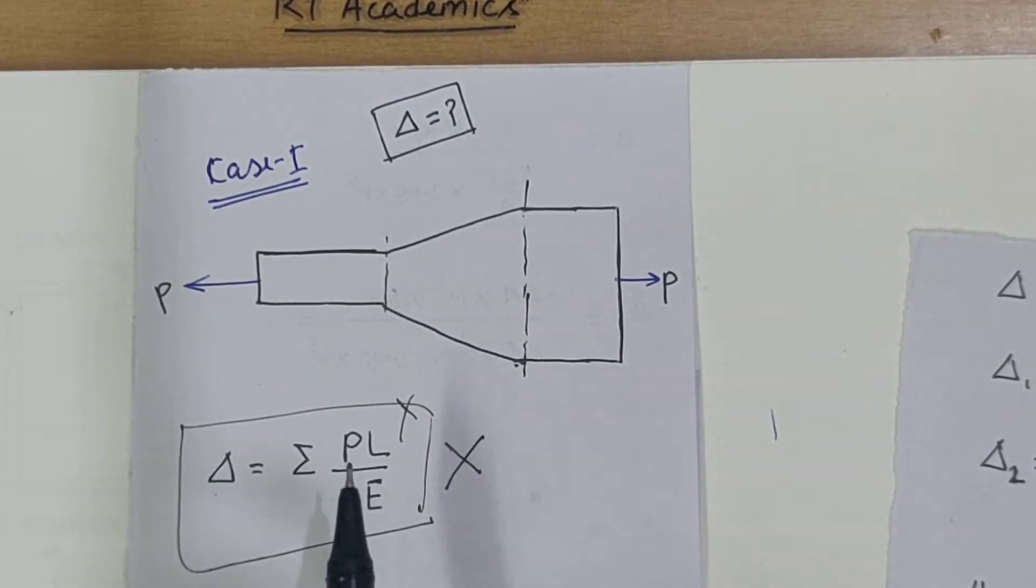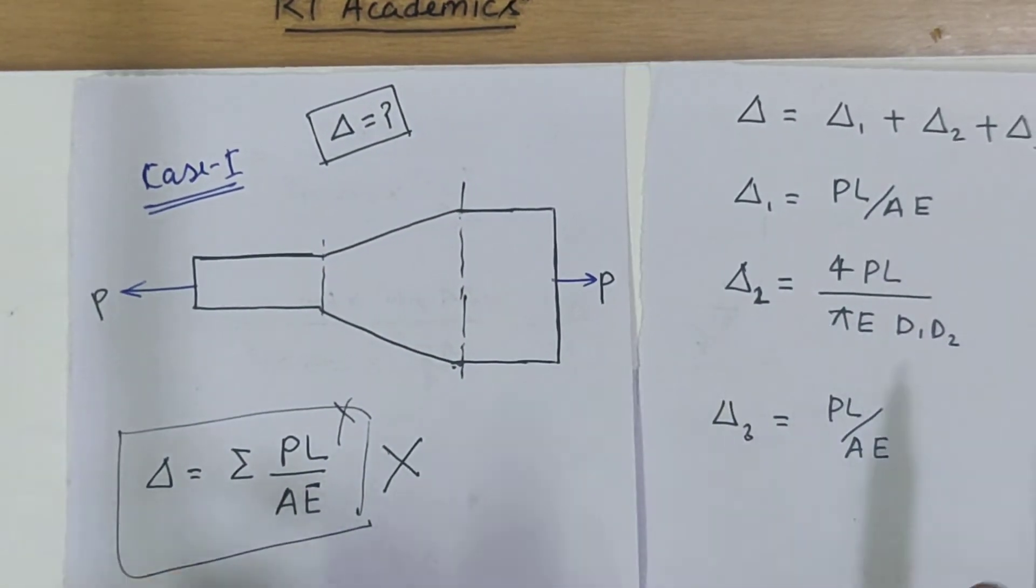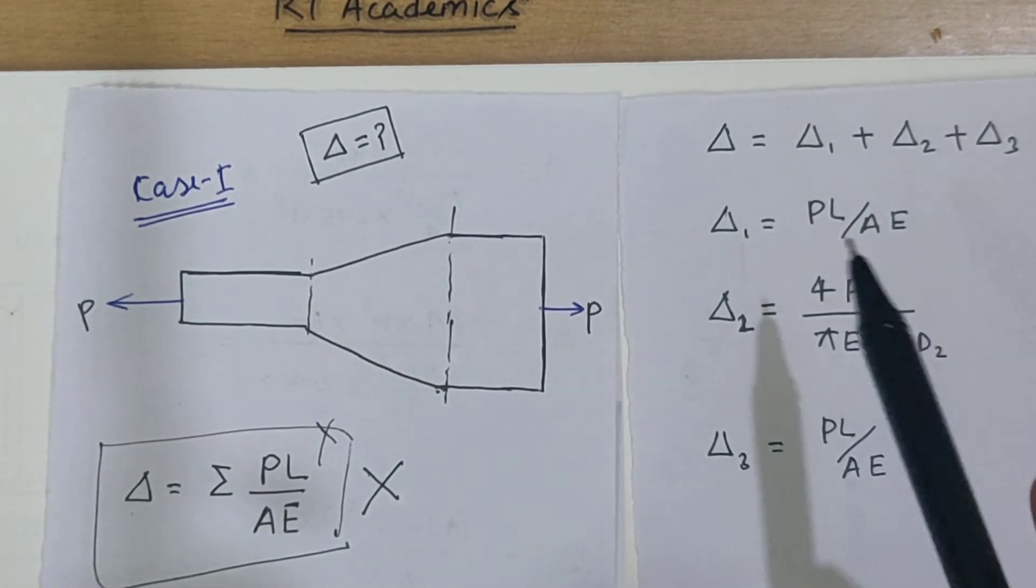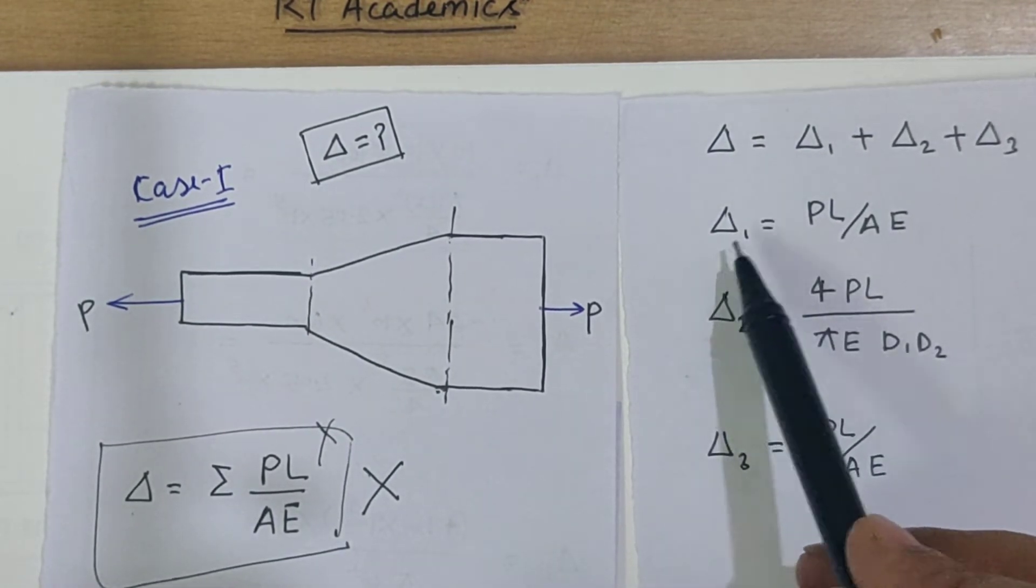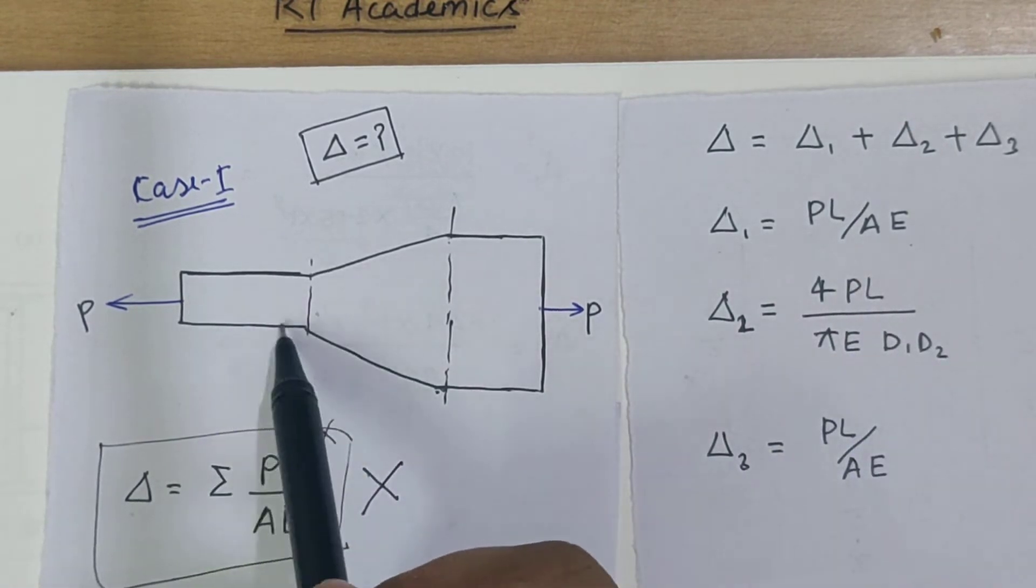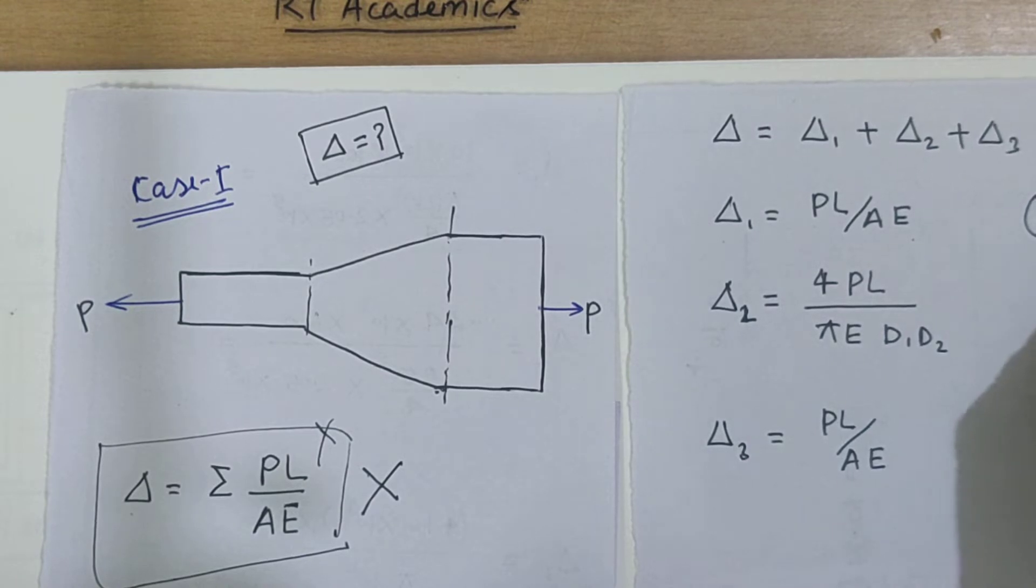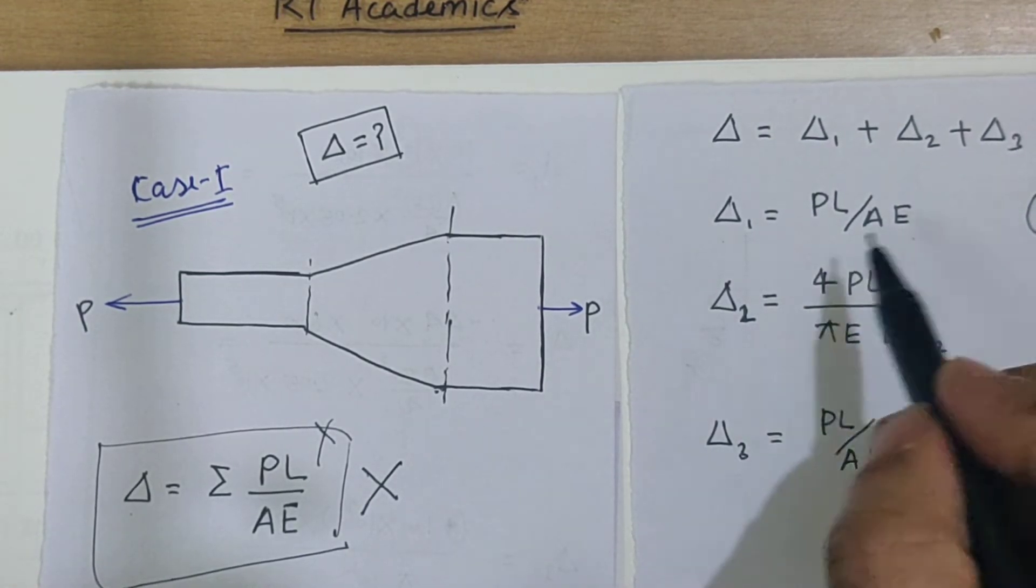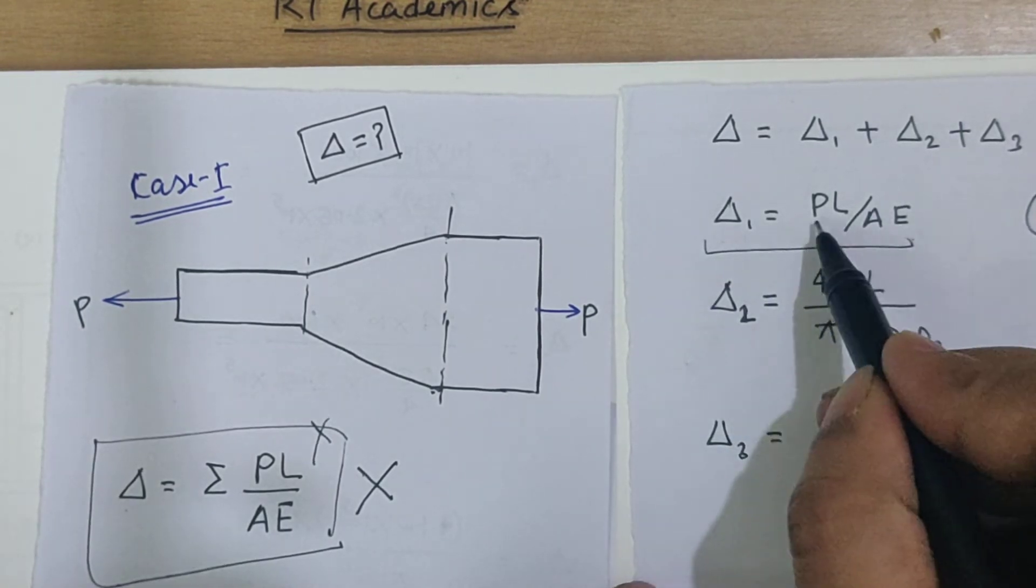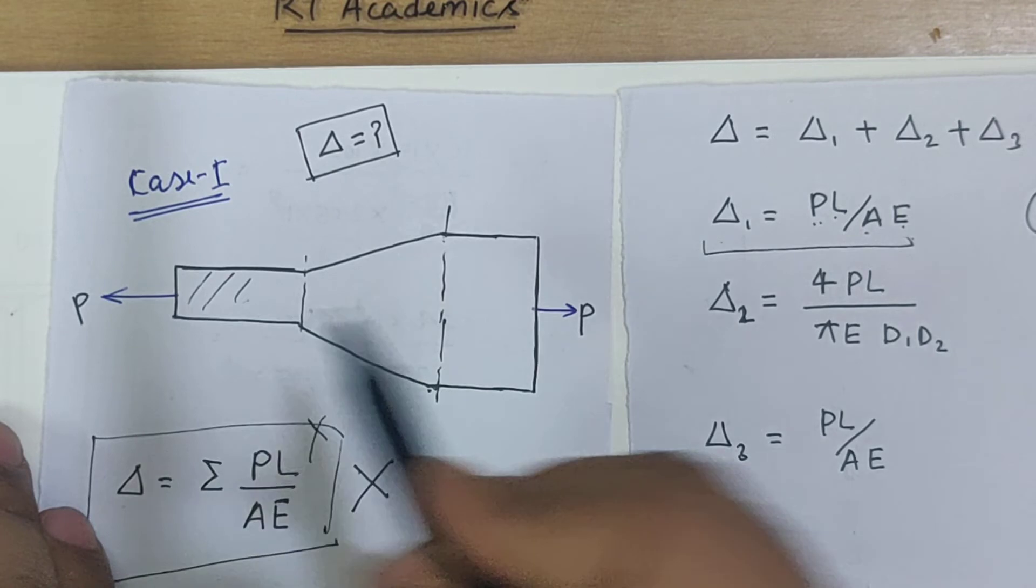For the deformation of this problem, we can divide the whole segment. Delta one is equal to PL over AE. If the cross-section of this bar is circular, square, or rectangular, we can calculate deformation using this relation PL/AE, where P is the force in this member, L is the length of this segment, and A is the cross-sectional area.